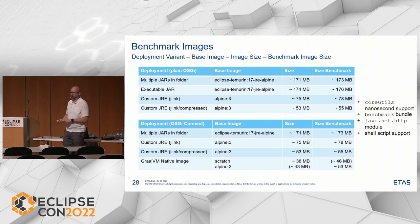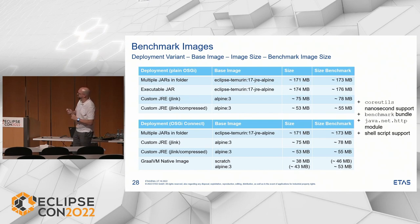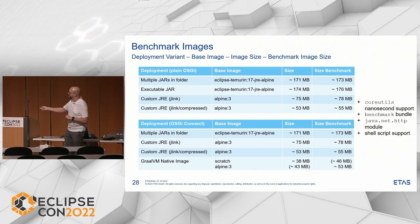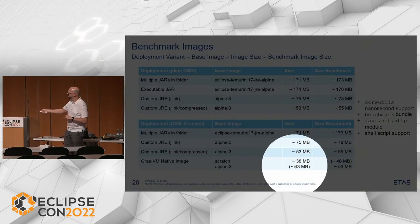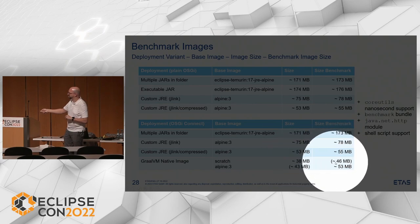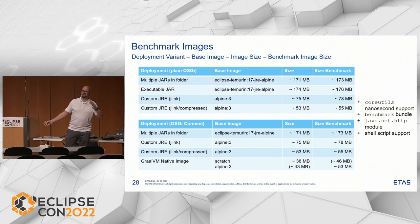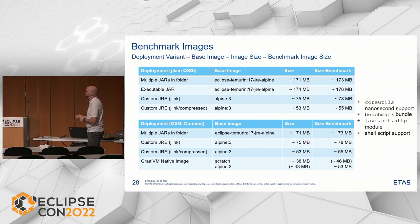The GraalVM native image requires Alpine because the scratch image has no shell. One really interesting thing: after I added the java.net.http module so I can send messages, the image — even the scratch image — increased by about eight megabytes. So every additional module creates quite an effect on the resulting native image size that you need to consider.